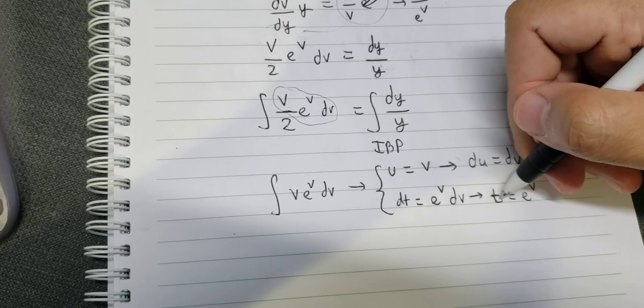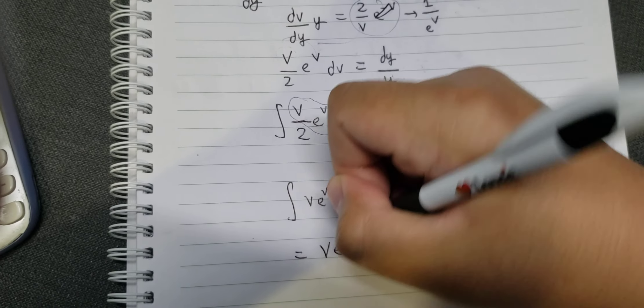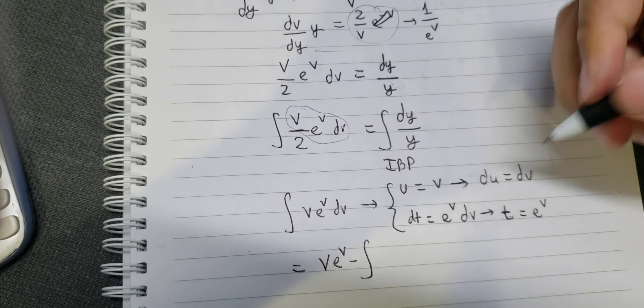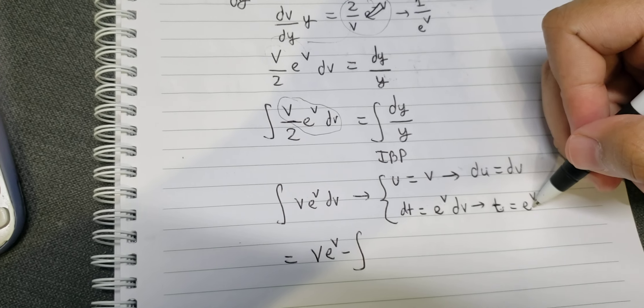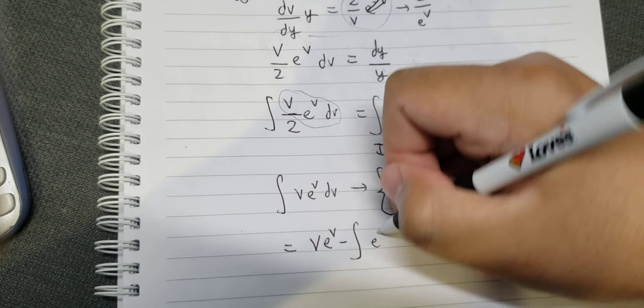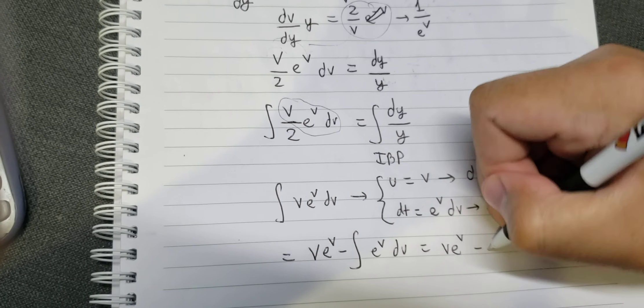Using the integration by parts formula, we have u times v minus the integral of u times dv, which is e to the power of v.